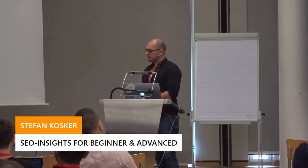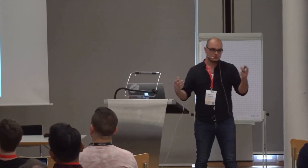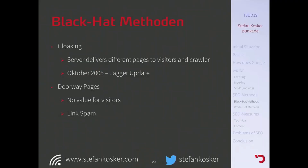First black hat method is cloaking — showing Google and your users two different pages. This doesn't work well anymore because Google indexes not only with its Googlebot but also with user agents. If the user agent and Googlebot receive two different pages, Google knows you are doing some shady stuff.